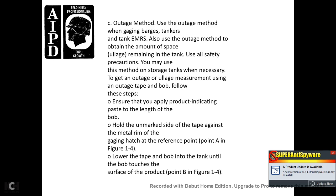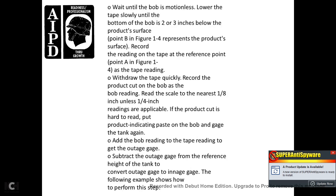37. Using an outage tape and bob with these steps. Ensure that you apply the product indicating paste to the bob. 38. Hold the unmarked side of the tape against the metal rim of the gauge hatch at the reference point — point A in Figure 14. Lower the tape and bob into the tank until the bob touches the surface of the product at point B in Figure 14. Wait until the bob is motionless, then lower the tape slowly until the bob is 2 or 3 inches below the product surface.